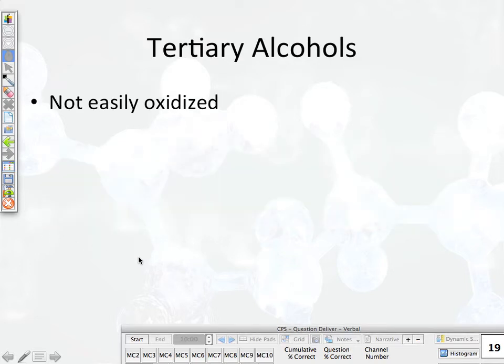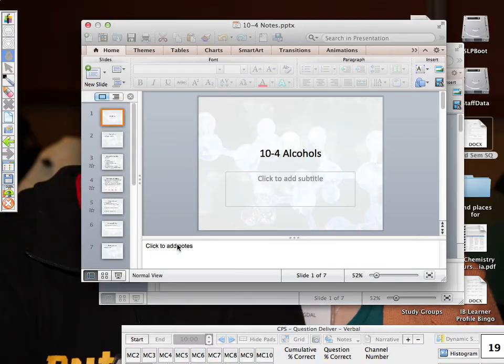So, let's look at our third type, tertiary alcohols. They're not readily going to be oxidized. They've got so much stuff around them that it's not going to be easy to take hydrogens away from it. Okay, that's 10-4. Ready for 10-5? Yes! Okay.